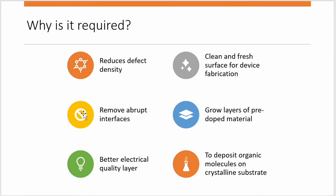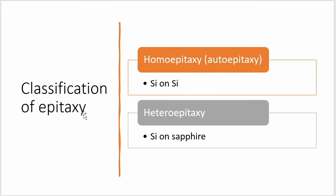Next is the classification of epitaxy. There are two types: homo-epitaxy and hetero-epitaxy. Homo-epitaxy is the overgrowth of identical material — the same material placed on the same material, like silicon on silicon. The crystalline structure is maintained; we put the diamond lattice on the diamond lattice. So there is no problem with compatibility or mismatch due to orientation, chemical properties, lattice parameters, or crystal structure.